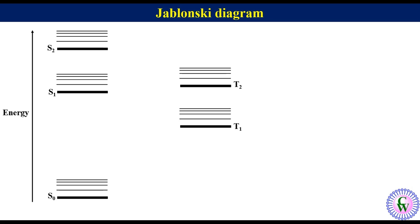In this diagram each bold horizontal line represents a different electronic state of the molecule. Each electronic state is associated with several vibrational energy levels represented by lighter horizontal lines. Photophysical processes are represented by arrows connecting the states.